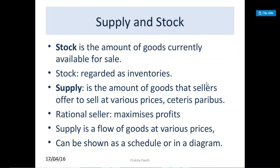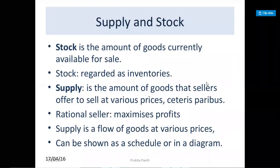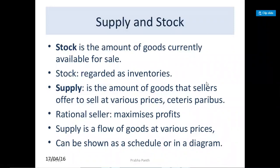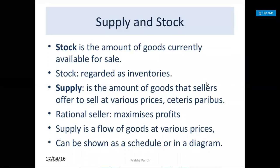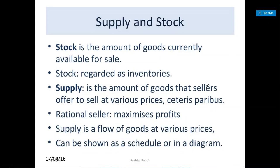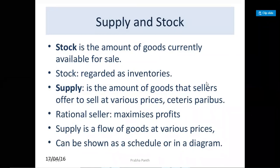Supply is the amount of goods that a seller offers to sell at various prices. Rational sellers aim to maximize profits. Supply is a flow of goods at various prices, which can be seen in a schedule or diagram.